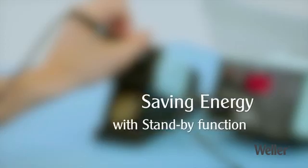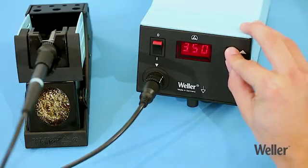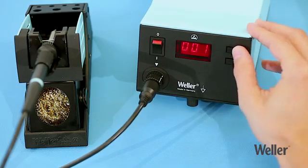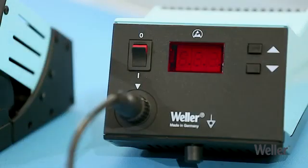The standby function saves energy and reduces running costs. Press and hold both buttons for two seconds to activate standby mode. Enter a setback time. The target temperature will be lowered to 150 degrees Celsius after the specified period of time.